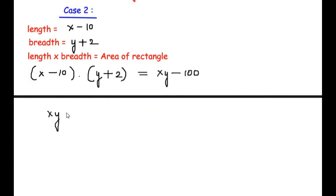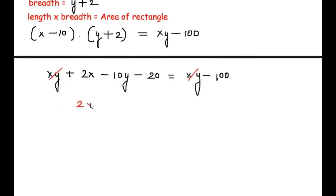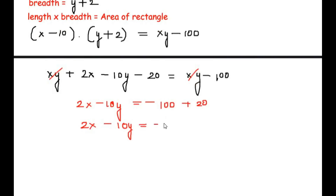Expanding the bracket: x times y is xy, x times +2 is +2x, −10 times y is −10y, and −10 times +2 gives −20. This equals xy minus 100. The xy terms cancel, leaving 2x − 10y − 20 = −100. Taking −20 to the other side gives 2x − 10y = −80. Let us consider this as equation 2.